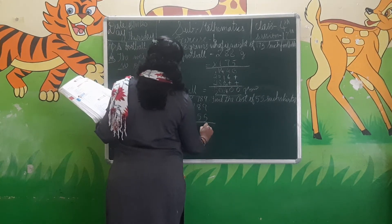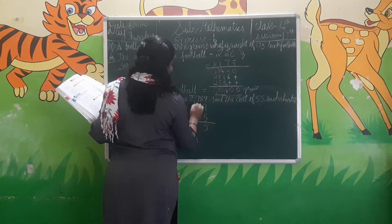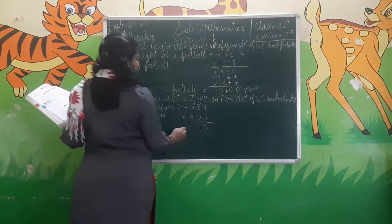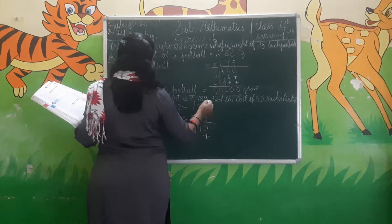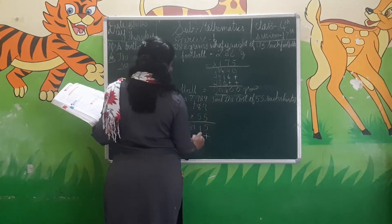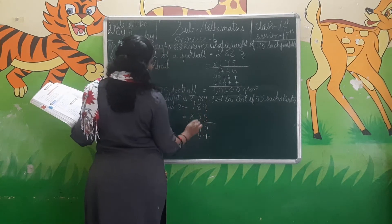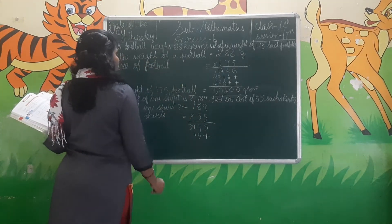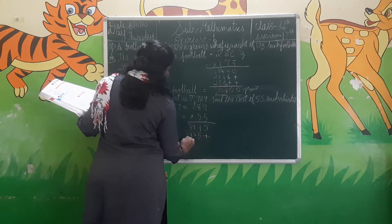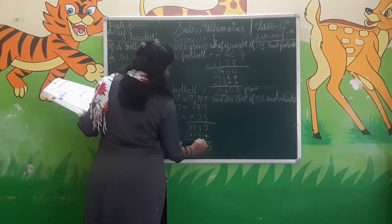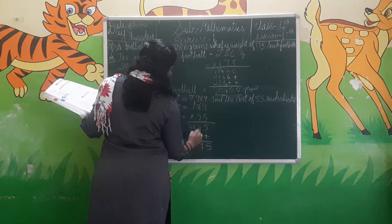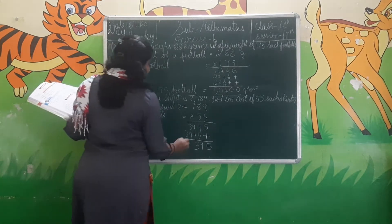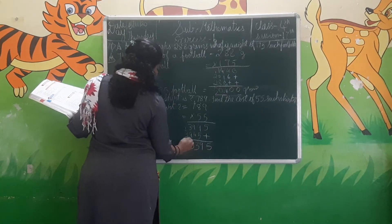5×9 is 45, 4 carry 5 here. 5×8 is 40, 40 plus 4 is 44, again 4 carry. 5×7 is 35, 35 plus 4 is 39. Now add it: 5, 4 plus 5 is 9, 9 plus 1 is 10, 10 plus 3 is 13, 3 plus 1 is 4.